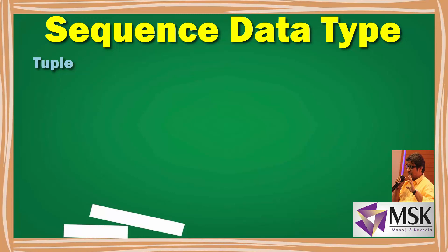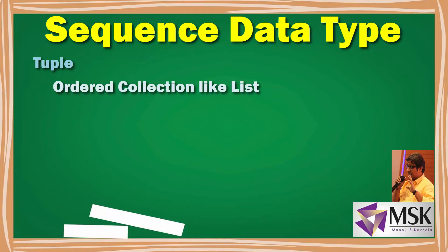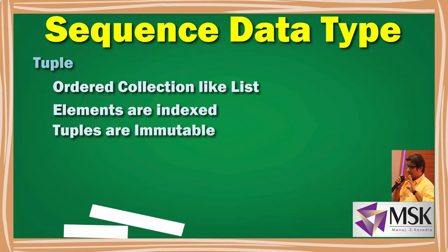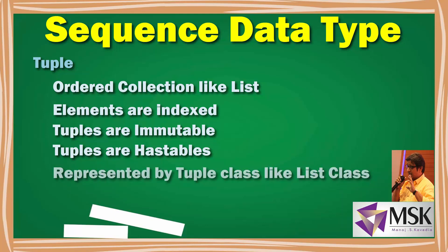Tuples are also ordered collections of objects in Python, similar to lists. The sequence stored in a tuple can be of any type and can be indexed by integers. The main difference between list and tuple is that tuples are immutable — you cannot change the length once it is declared. Tuples are hash tables whereas lists are not. Tuples are represented by the tuple class, strings by the string class, and lists by the list class.